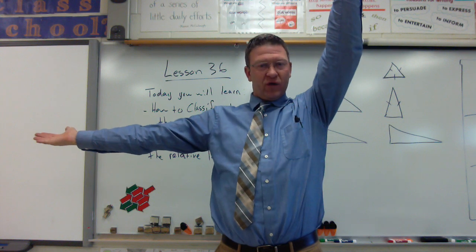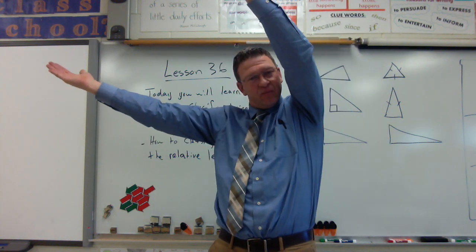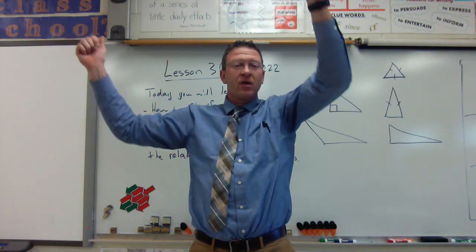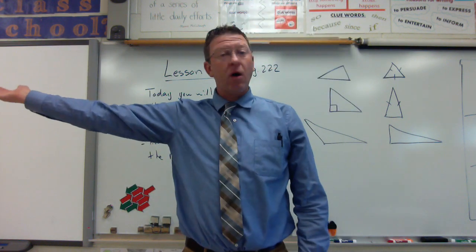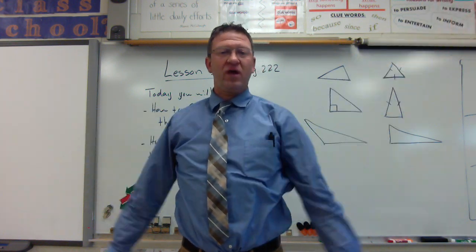We got a right angle. It's a 90 degree angle. We got a cute little angle where they're closer together, and we got obtuse. Remember, our horizontal and the angle going away. That would be an obtuse angle.